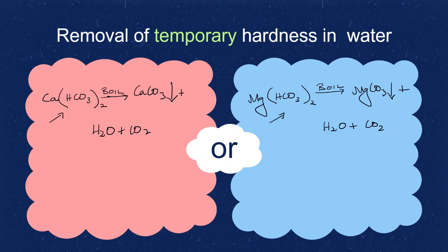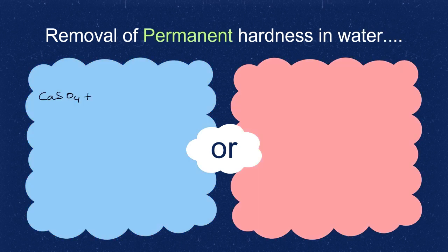To remove permanent hardness of water, we know that permanent hardness is caused by the sulfate of calcium or magnesium. We are taking one as an example, and then you have to use washing soda to it. What is washing soda? It is Na2CO3.